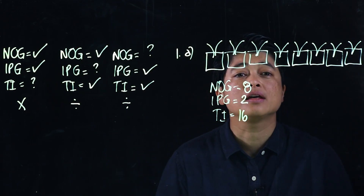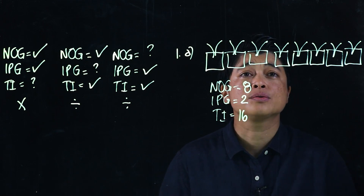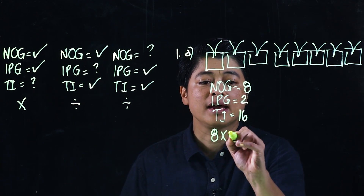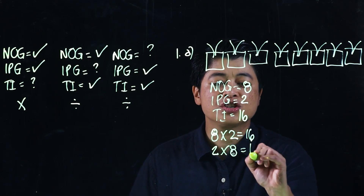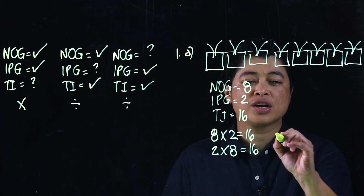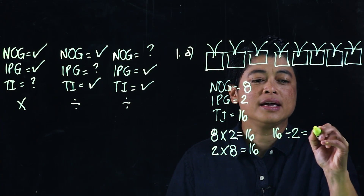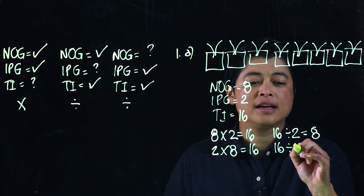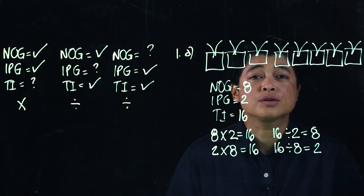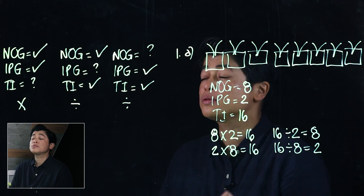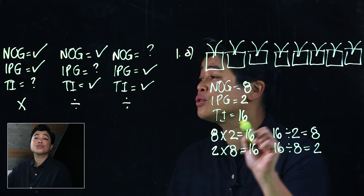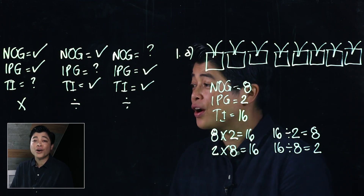We're asked to come up with multiplication and division equations. So the four equations are: eight times two equals sixteen, two times eight equals sixteen, sixteen divided by two equals eight, and sixteen divided by eight equals two. All four equations are based on identifying number of groups, items per group, and total items. Since there are no question marks, we can produce all four equations. That concludes the last lesson of the chapter — see you in the next chapter.